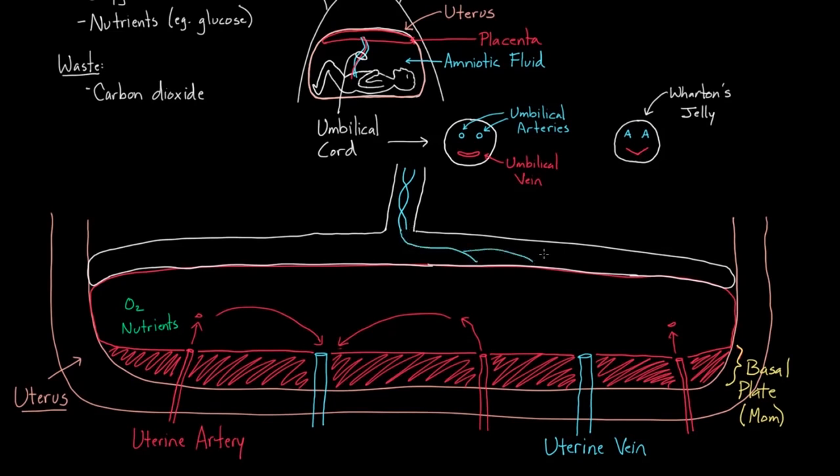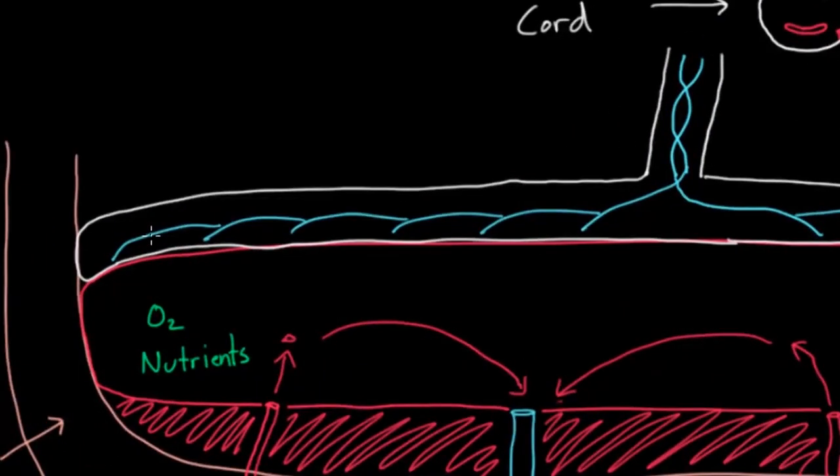And let's say that the branches go kind of all over the place. Let's say they go like this. Let's draw five or six branches over here. And let's draw some branches down on this side too. We've got lots of branches off the umbilical arteries. And they want access to the oxygen and nutrients.